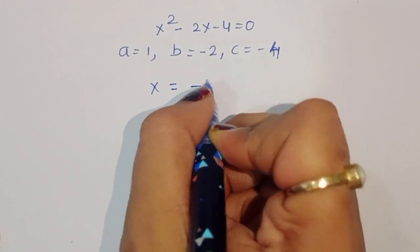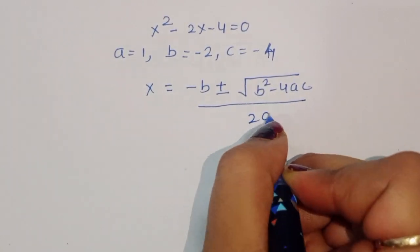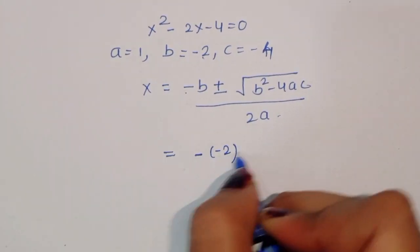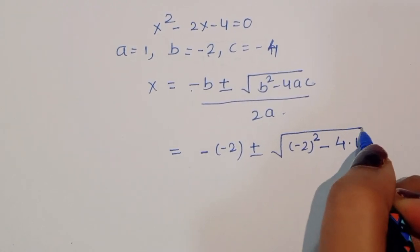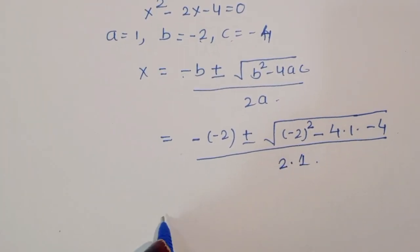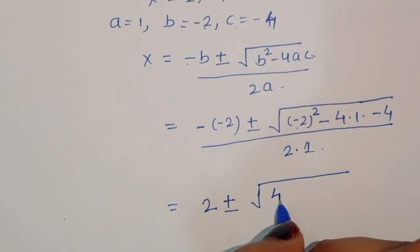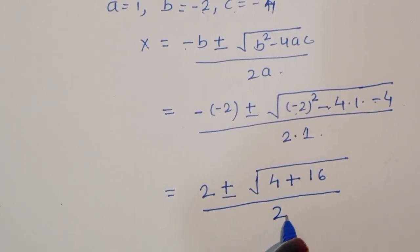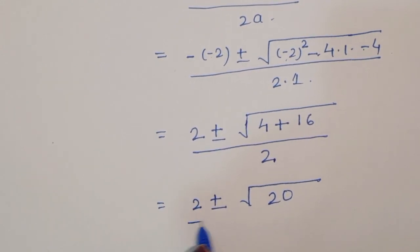The value of x is equal to minus b plus or minus the square root of b squared minus 4ac, divided by 2a. Substituting: minus of minus 2 is plus 2, b squared is 4, 4 times a times c is 4 times 1 times minus 4, which is minus 16. So we get 2 plus or minus the square root of 4 plus 16, divided by 2, which is 2 plus or minus the square root of 20, divided by 2.